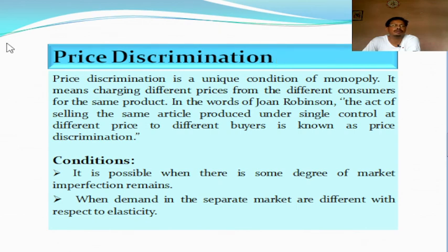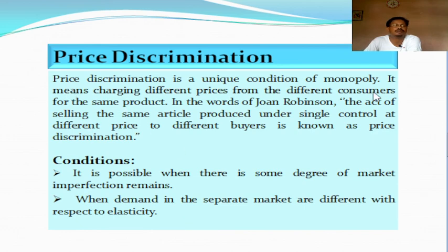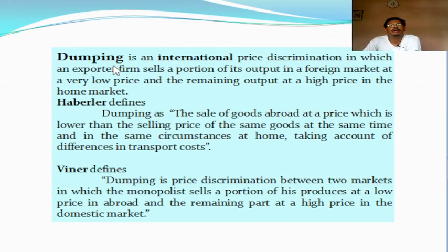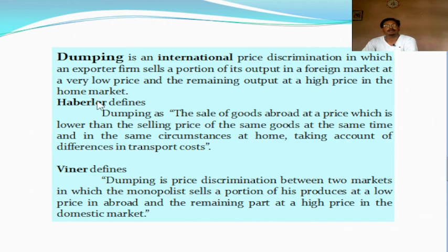The next peculiarity is price discrimination, which we have already discussed. Price discrimination is possible when there is some degree of market imperfection — meaning when goods cannot be resold from one market to another, and demand in separate markets differs with respect to elasticity — then only price discrimination is possible and profitable. A special case of price discrimination is known as dumping, which is international price discrimination: the exporter sells a portion of its output into the foreign market at a very low price compared to the domestic market, while selling the remaining output at a high price in the home market.